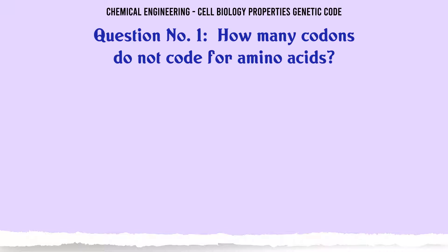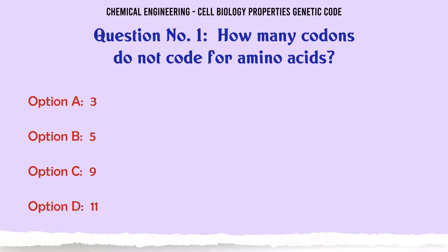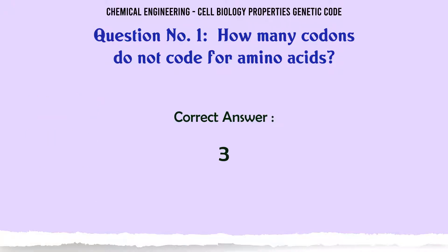How many codons do not code for amino acids? A) 3, B) 5, C) 9, D) 11. The correct answer is 3.